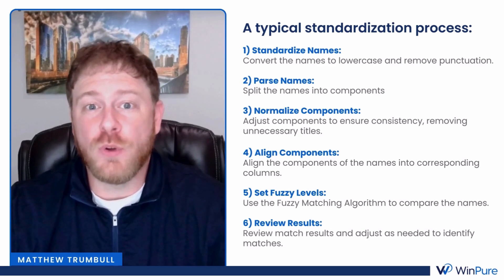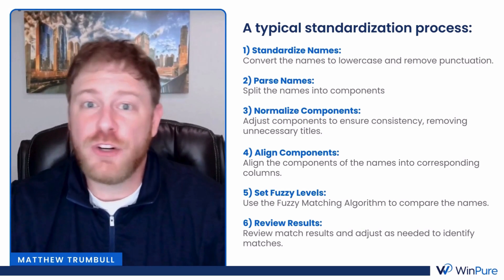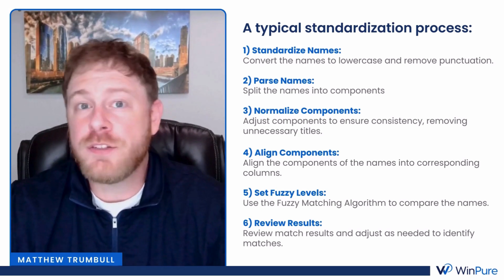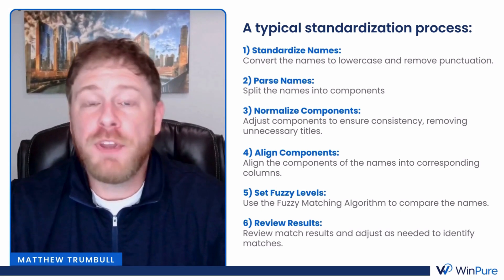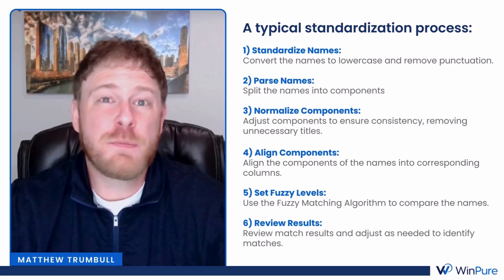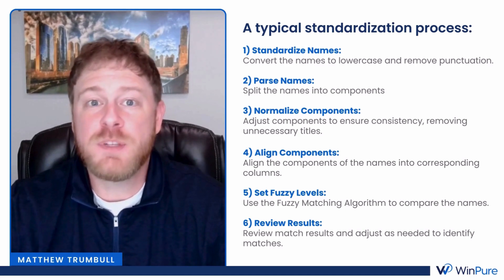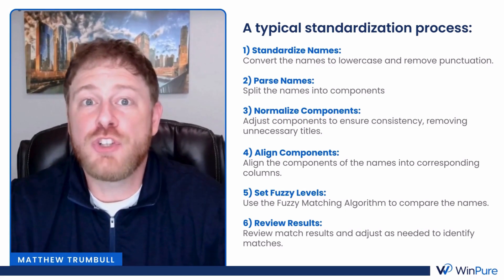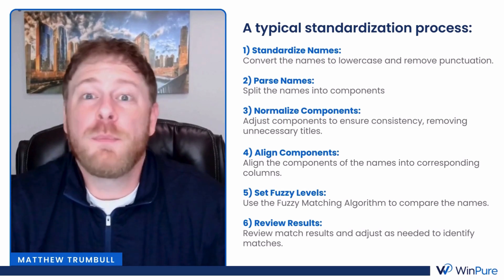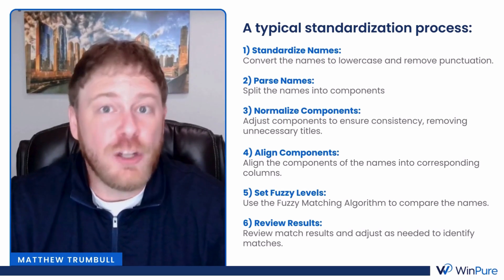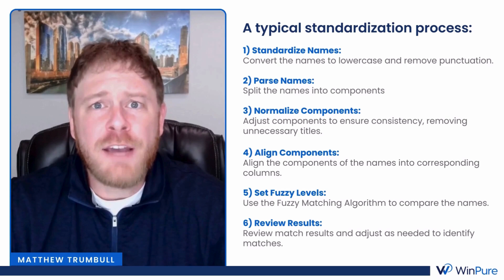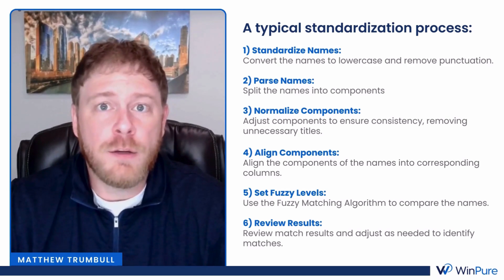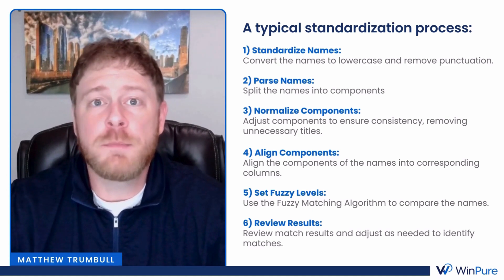A typical standardization process is going to mean having to follow all of these steps to really get to your end result. This is going to include things like standardizing names — setting them all as uppercase or lowercase and removing extra punctuations — splitting the names into separate columns, normalizing the data to ensure consistency by removing things like titles, and aligning the attributes or names into the corresponding columns so you don't have first names and last names mixed up.